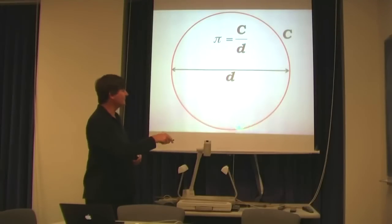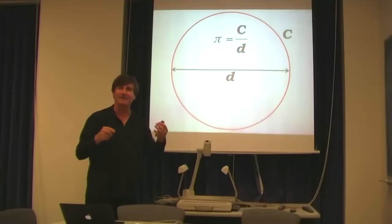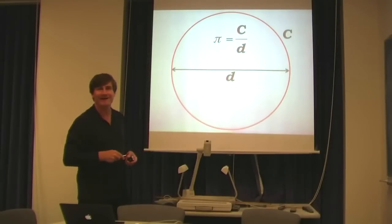The fact that the circumference of a circle divided by the diameter gives you a number which is independent of the size of the circle has been known for a very long time, so far back that we don't even know the origin of the concept. And that number we now call pi.